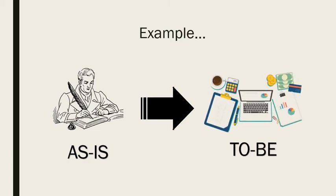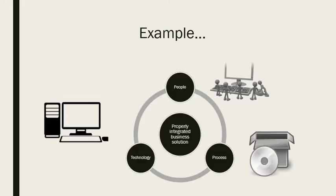Let us assume that our organization wants to change from a manual to an electronic bookkeeping system. To implement this change we need to buy a new system and software — technology — operate in terms of the general prescriptions of the system — process — and ensure that people are trained in the use of the system and software, and that any uncertainty and apprehension in using the system is addressed properly.